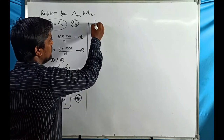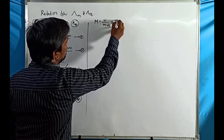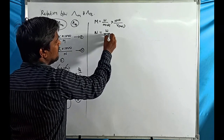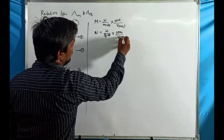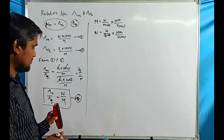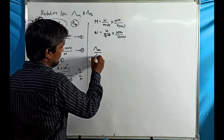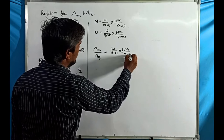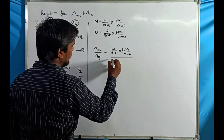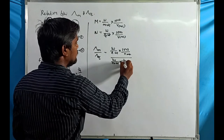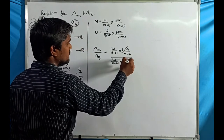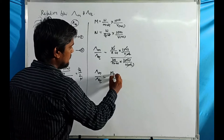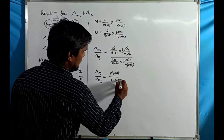We know that molarity equals weight divided by molecular weight, times 1000 divided by volume in mL. Similarly, normality equals weight divided by equivalent weight, times 1000 divided by volume in mL. Substituting these into equation 3, the 1000s, volumes, and weights all cancel, giving lambda m / lambda equivalent = molecular weight / equivalent weight.